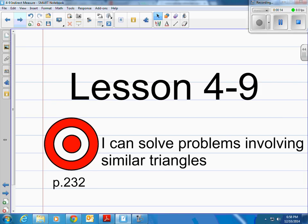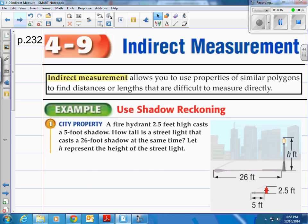It's also called indirect measurement. What is indirect measurement? Well that allows you to use properties of similar polygons and today we're going to be using triangles to find distances or lengths that are difficult to measure directly.